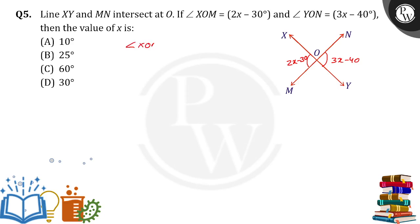So here angle XOM is equal to angle YON because they both are vertically opposite angles. So 2x minus 30 is equal to 3x minus 40 degrees.